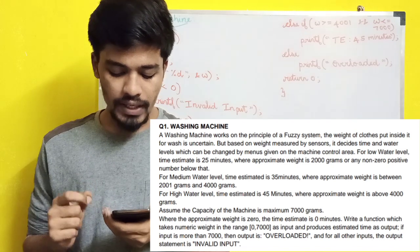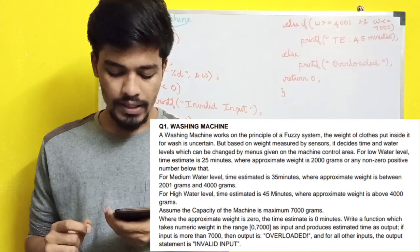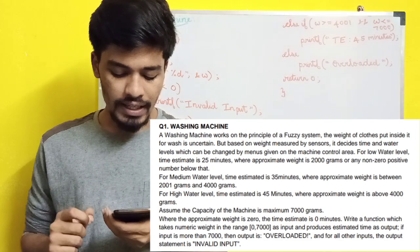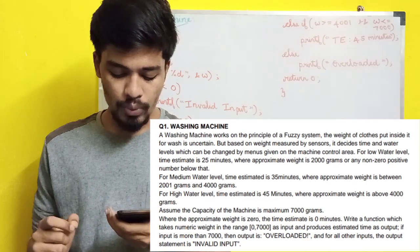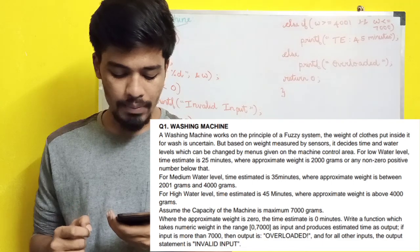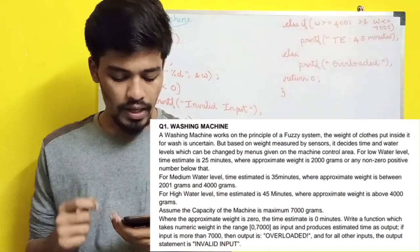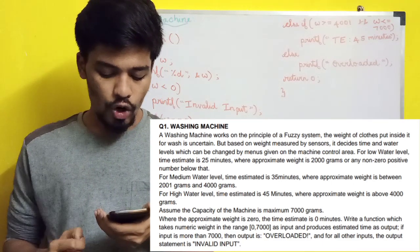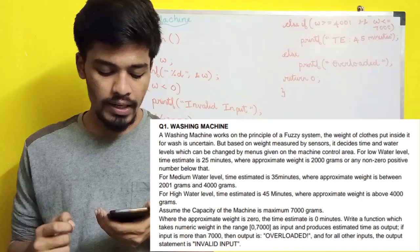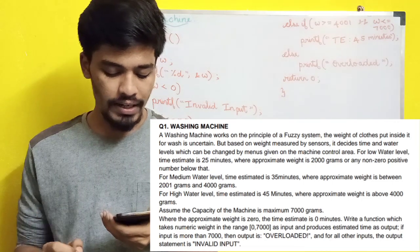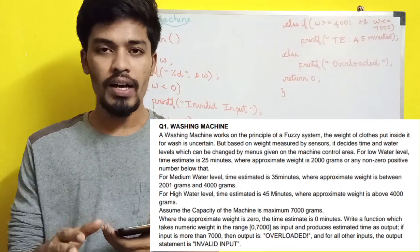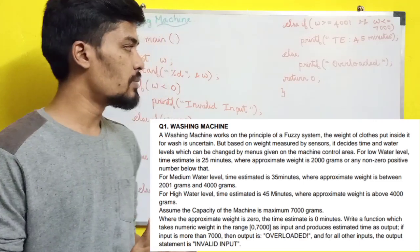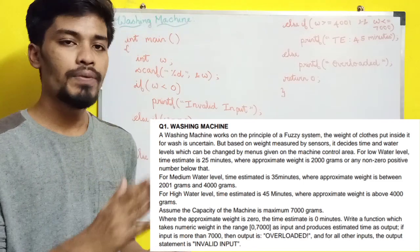When the approximate weight is 0 the estimated time is 0 minutes. Write a function which takes a numeric weight in the range 0 to 7000 as input and produces estimated time as output. If the input is more than 7000 then the output is 'overloaded', and for all other invalid inputs the output statement is 'invalid'. This is a normal simple program using the if-else statement.